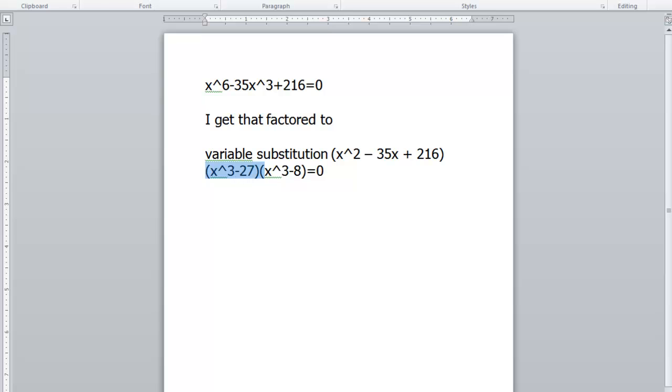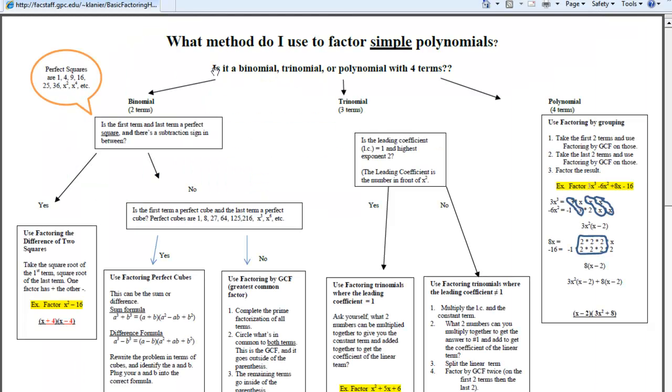is ask yourself is it a binomial, trinomial, or polynomial with four terms. It's a binomial because you have two terms.